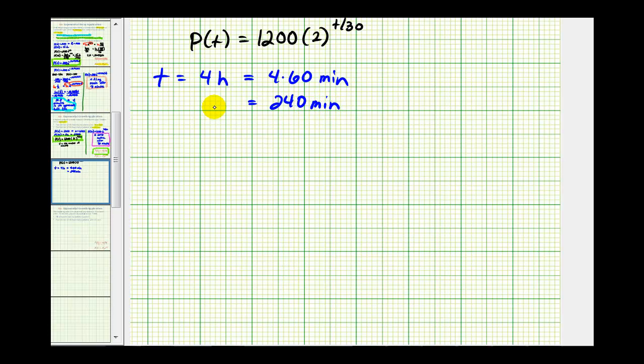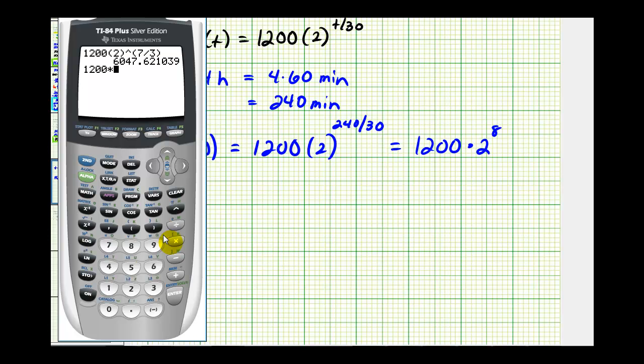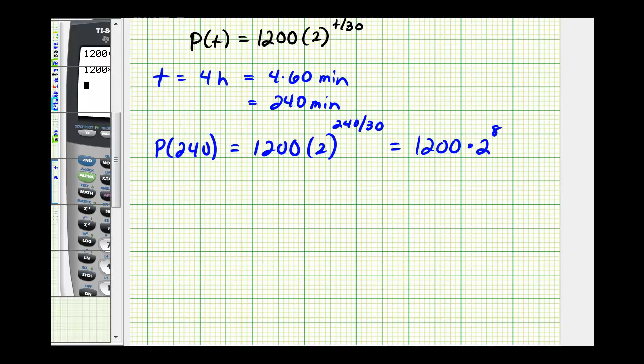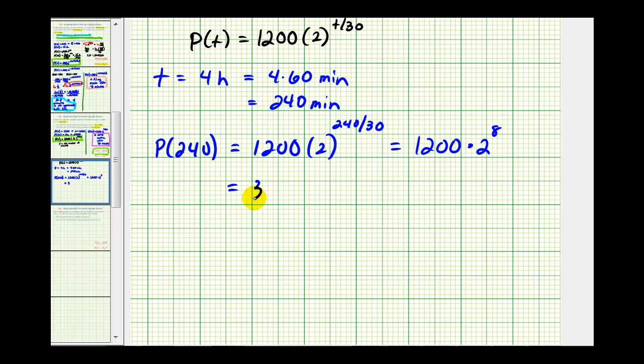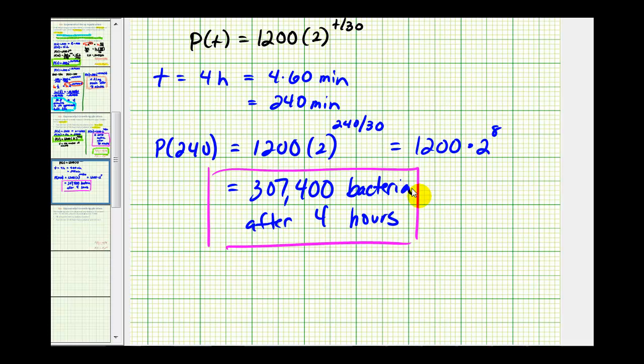So to determine the population after four hours, we need to determine the value of P(240), which would be 1,200 times two raised to the power of 240 divided by 30. Well, this simplifies to eight, so we have 1,200 times two to the eighth power. So there will be 307,200 bacteria after four hours. Okay, I hope you found this helpful.